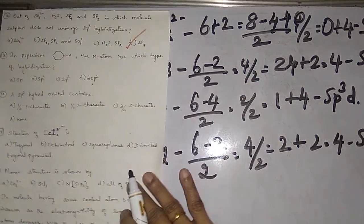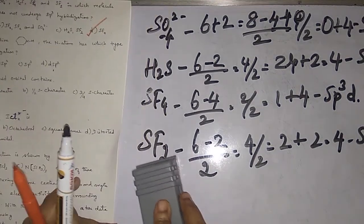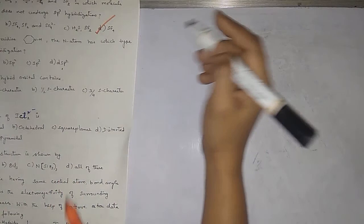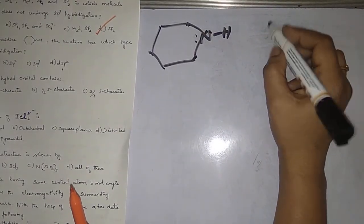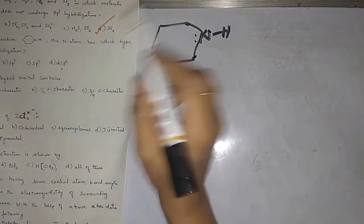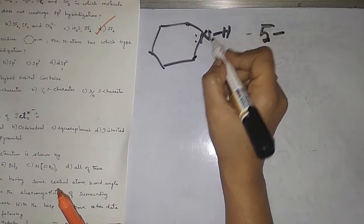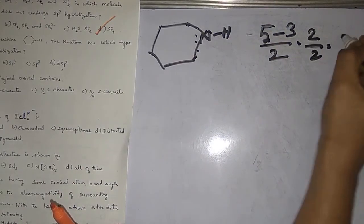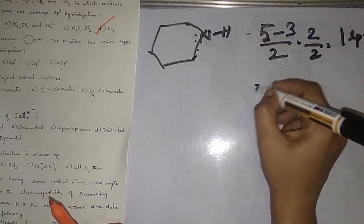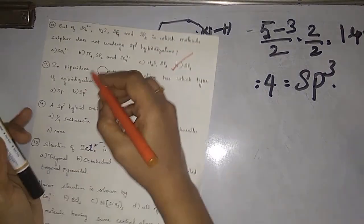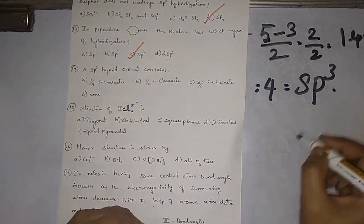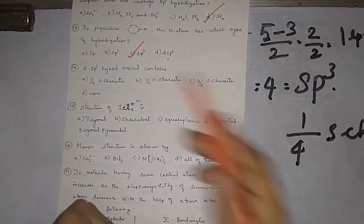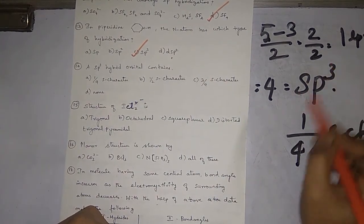In piperidine, what type of hybridization does the nitrogen atom have? Looking at the structure, nitrogen has two carbon atoms and one hydrogen bonded — three bonded atoms and one lone pair. Calculating: 5 − 3 ÷ 2 = 1 lone pair plus 3 = 4, so sp3 hybridization. In sp3, there is one s orbital out of four, so the s-character is 1/4.